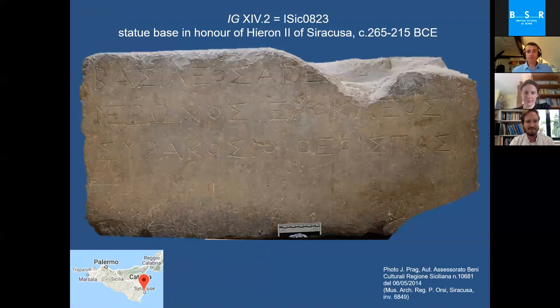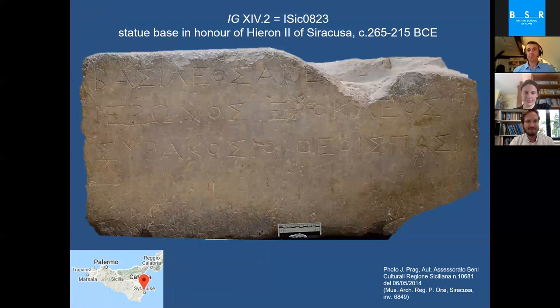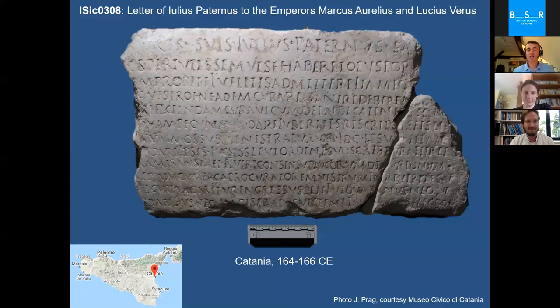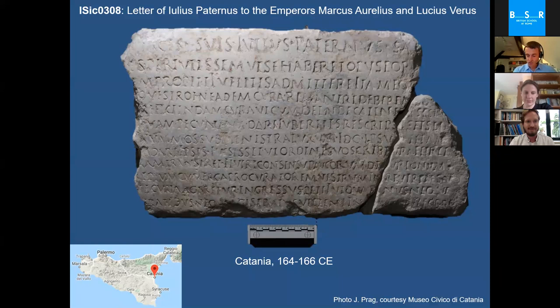We can look at examples of individual inscriptions which, as most commonly used in broader historical writing, offer glimpses and contributions to great history. For instance, a monumental statue base for King Hiero II of Syracuse reflects the presence of great people, big history, political history. An example from Catania — a letter written by the imperial official Julius Paternus to the emperors Marcus Aurelius and Lucius Verus in the 2nd century CE — relates to a financial dispute within the city of Catania. So epigraphy can feed directly into political and institutional history at the monumental level.